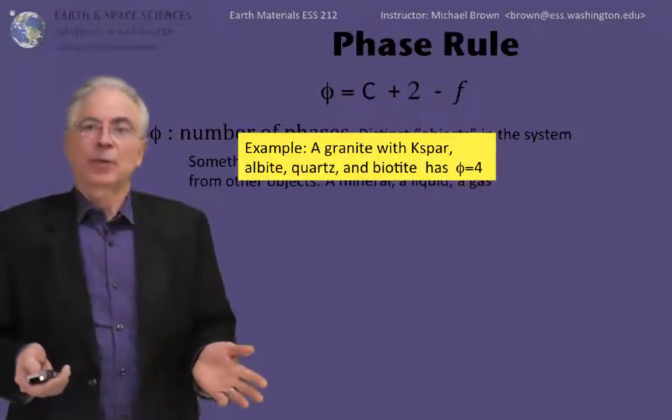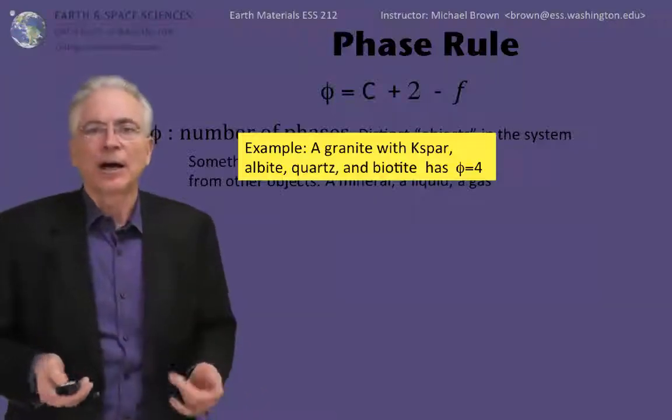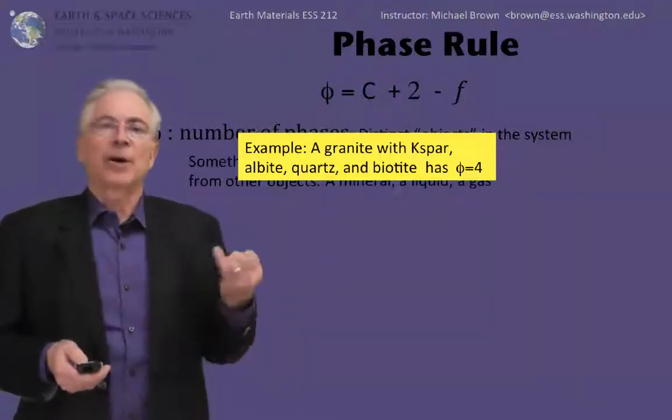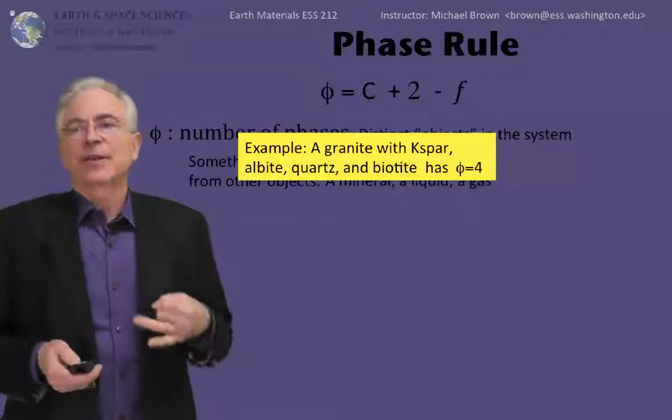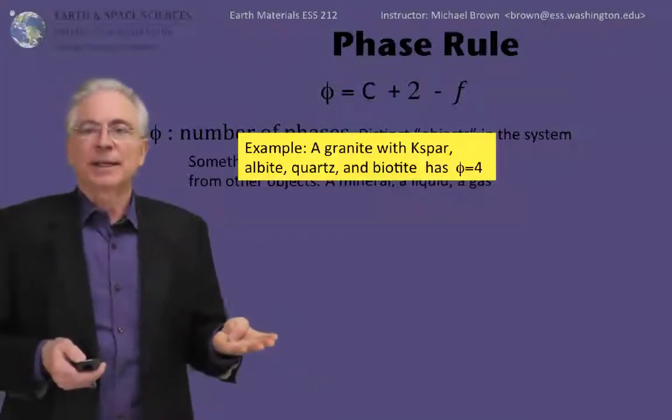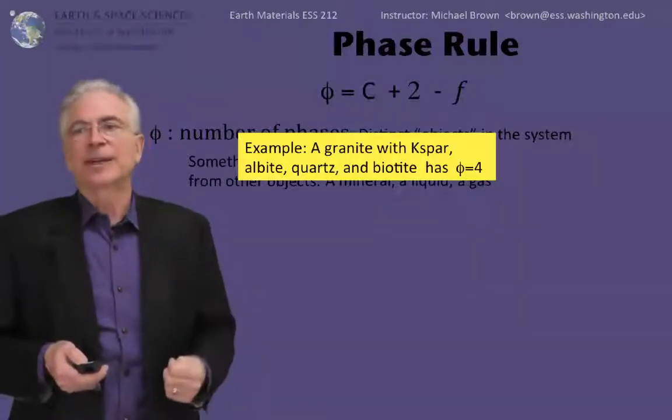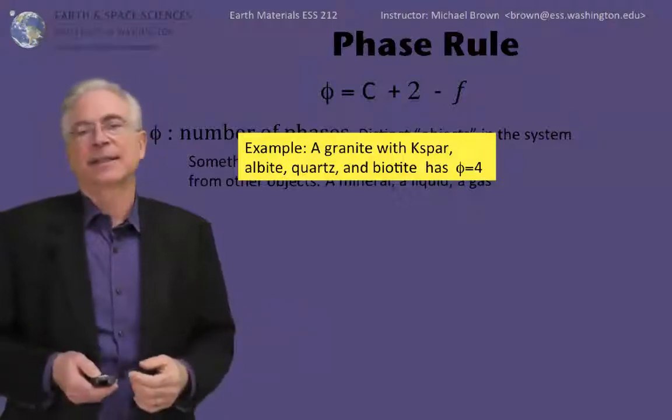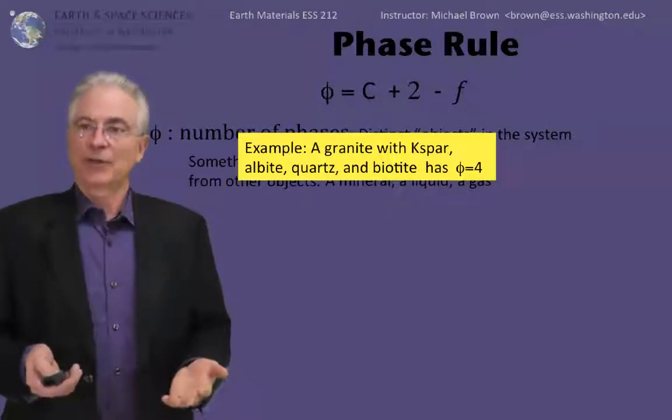Now I'll just give you one example. A granite could consist of a potassium feldspar, a plagioclase feldspar, quartz, and biotite. There are four mineral phases there. So phi in this simple example is four.